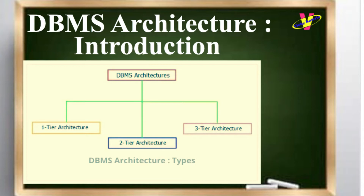The DBMS architecture can be classified into three types as per the uses and requirements of the users: one-tier architecture, two-tier architecture, and three-tier architecture.